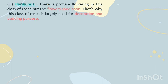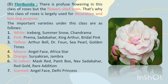Second: Floribunda. There is profuse flowering in this class of roses but the flowers shed soon. That's why this class of roses is largely used for decoration and wedding purposes. Important varieties — in white: Iceberg, Summer Snow, Chandrama. In pink: Prema, Sadabahar, King Arthur's, Bridal Pink. In yellow: Arthur Bell, Dr. Fones, Sea Pearl, Golden Times. In mauve: Angel Face, Afrika Star. In orange: Sourav, Karen, Jambra. In bi-color: Masquerade, Paintbox, Nav Sadabahar, Red Coat, Rare Edition. In scented: Angel Face, Delhi Princess.